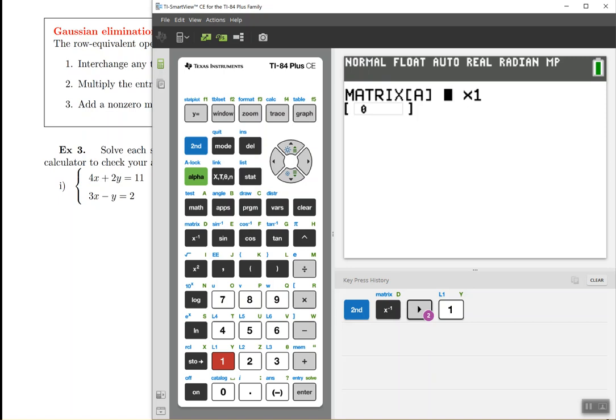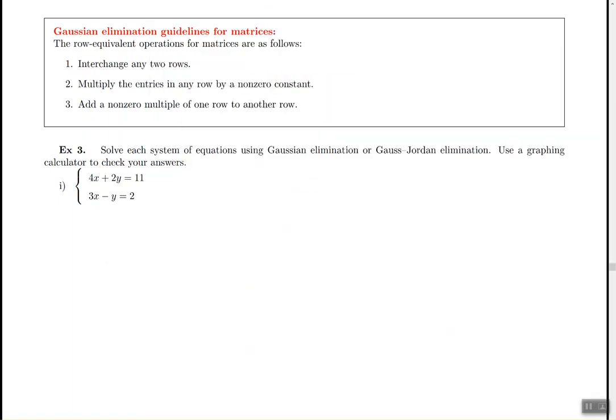And as you see right there, it says one by one. So that's what it wants. It wants the size of this matrix. So in order to get the size of the matrix, let's look back over here. I'm going to go ahead and write down the problem: 4x plus 2y equals 11, then 3x minus y equal to 2. So let's extract the matrix out. What would the augmented matrix look like?